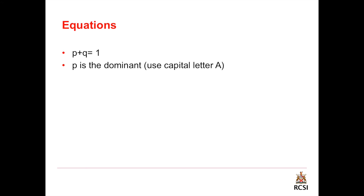p is the dominant allele frequency and we always use a capital letter, like a capital A for example. q is the recessive allele frequency and we always use a small letter, like a small a for example.